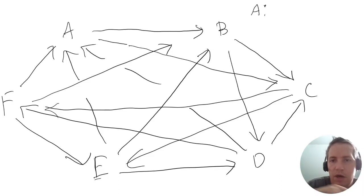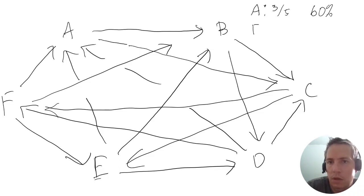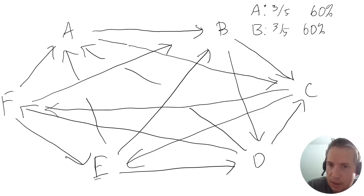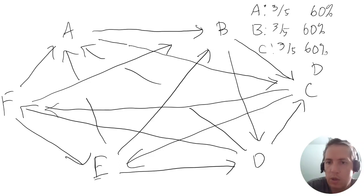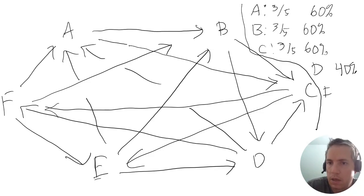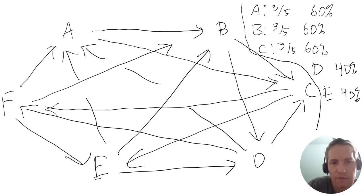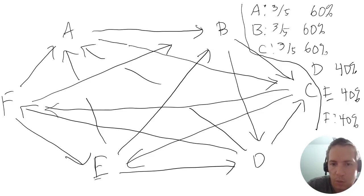Let's compute the winning percentages. A won three out of five — 60%. B also won three out of five — 60%. C also won three out of five — 60%. D won two out of five — 40%. E won two out of five — 40%. F won two out of five — 40%. We set this up on purpose to get a three-way tie at 60% and a three-way tie at 40%.